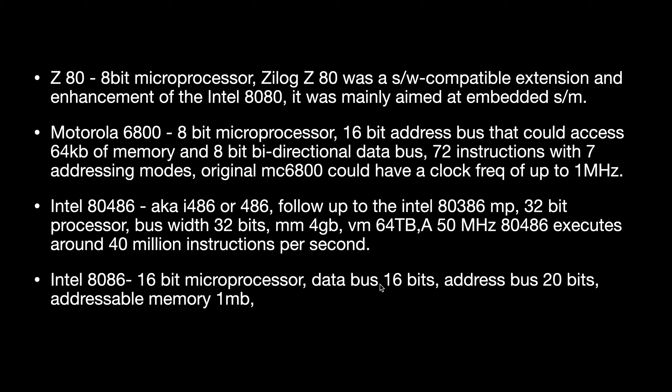We studied the 8086 in B.Tech microprocessor subjects, so you should have some memory of this. The key points are: data bus is 16 bits and address bus is 20 bits. The memory is divided into odd and even banks, accessed concurrently to read 16 bits of data in one clock cycle. The Intel 8088 is a slightly modified chip with an external 8-bit data bus.